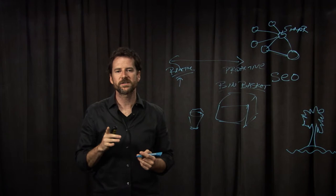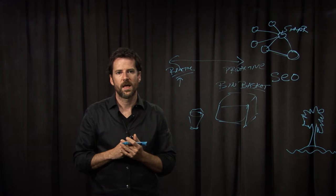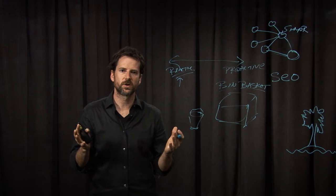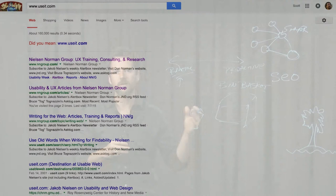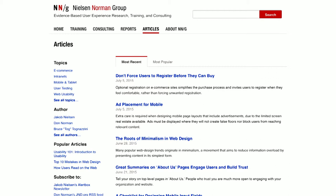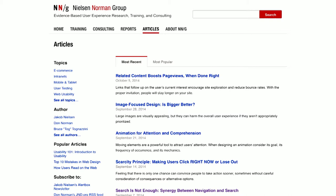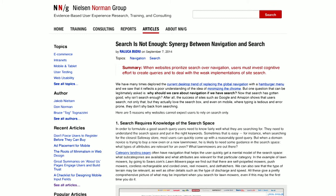The second error was that useit.com is now folded into the larger Nielsen Norman Group site. No problem — the second result here is the articles section, which is what the Alert Box is now part of. So I clicked there and started looking through different articles, just skimming page by page. When I got to page six, I found one of their really great search articles.